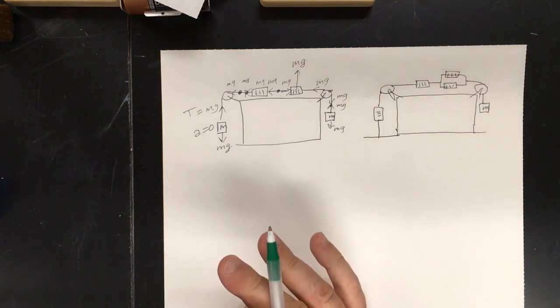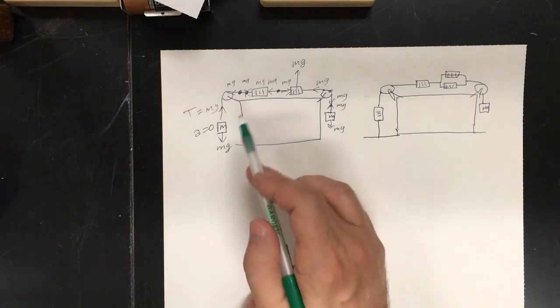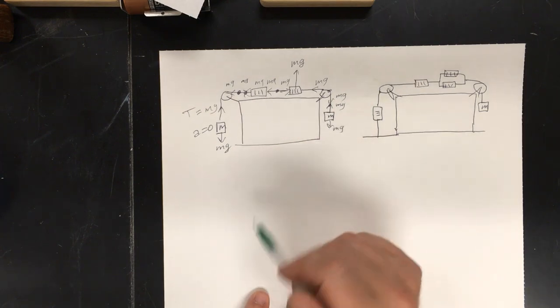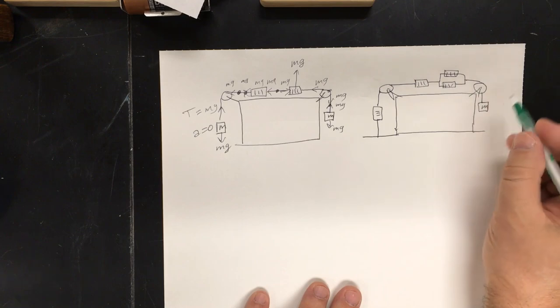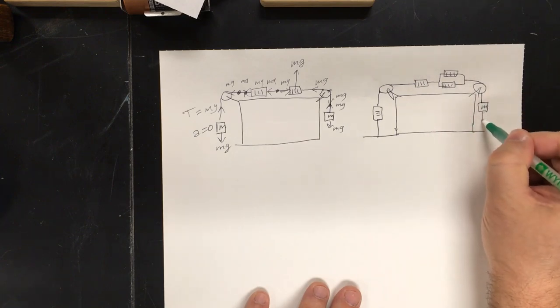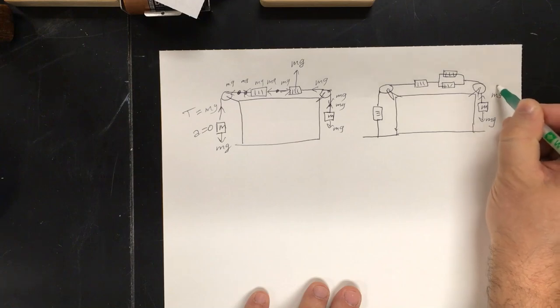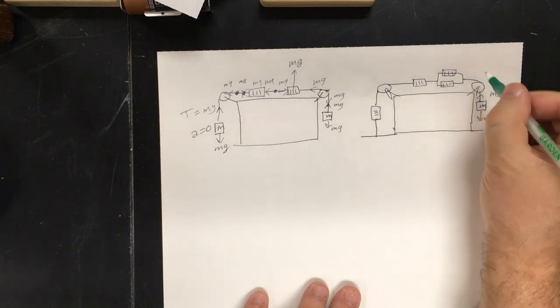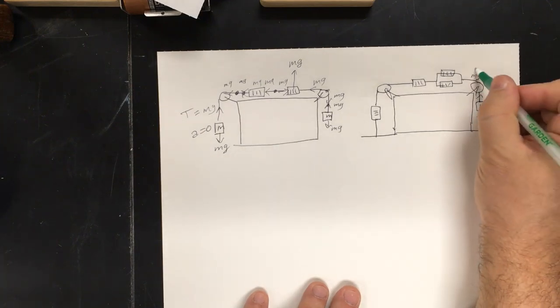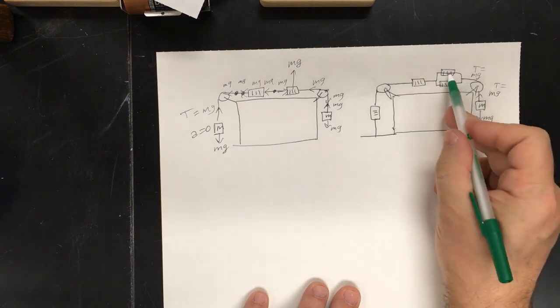Now, if it's reading only mass, then it reads m, m, and m. Now, over here, now that we've understood that, if this is mg, then this tension must be mg. Then this tension must be mg. What about these two?